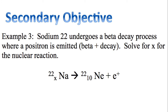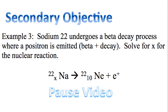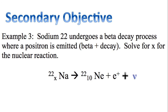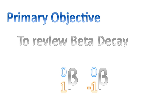Example 3 — sodium-22 undergoes a beta decay process where a positron is emitted: a beta plus decay. Solve for X. It's important to note that a neutrino is also created during this decay. Going through the math: X equals 10 plus one — it's one because the positron has a charge of one — so X equals 11. In conclusion, I hope you've enjoyed this review of beta decay. Have a great day!